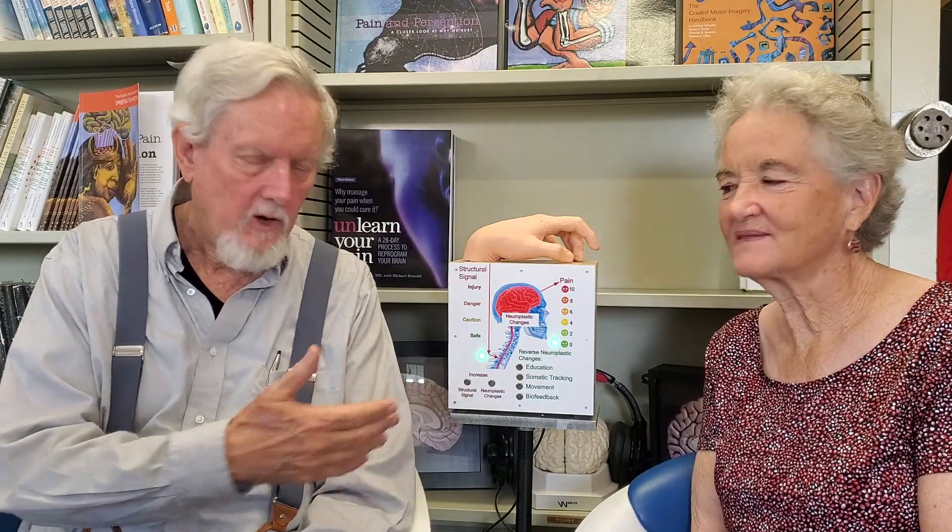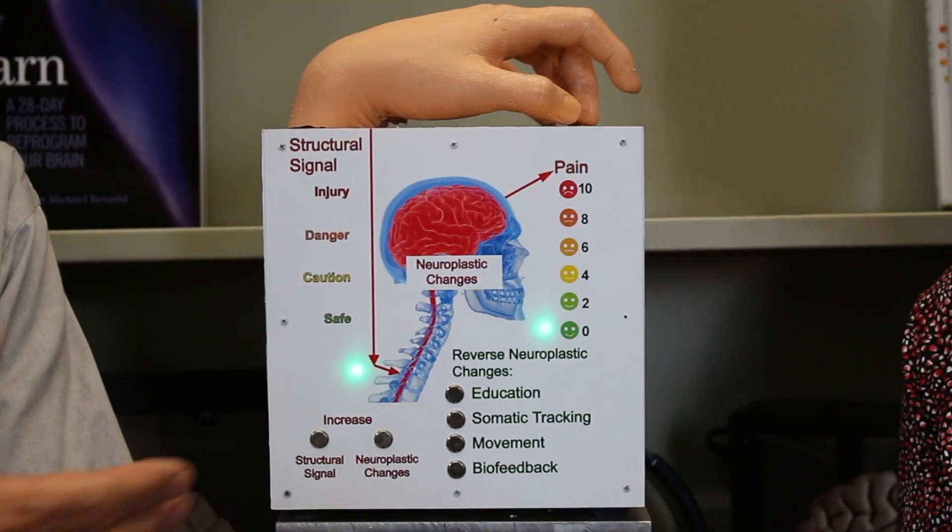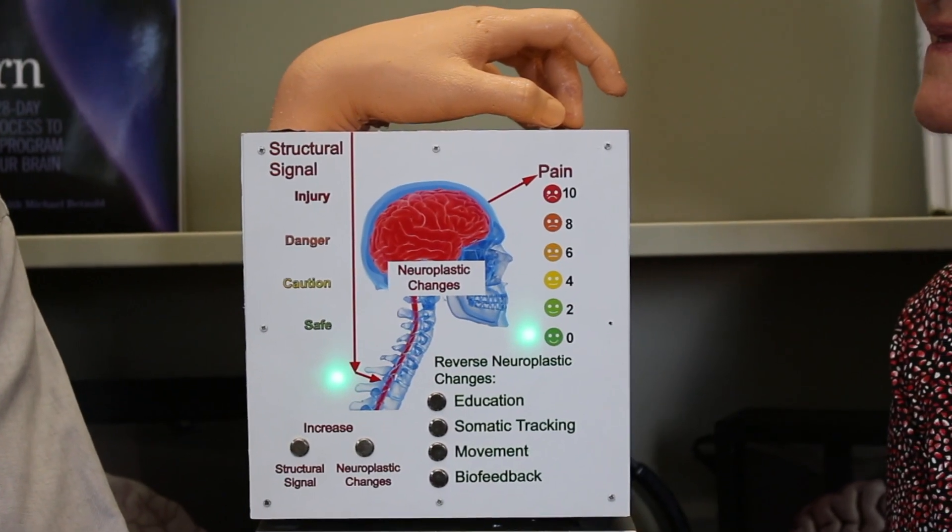I'm Paul Hansma, and I have with me Alice Aldrich, and we're both emeritus professors here at UCSB. We're going to show you this demonstration of how chronic pain works.